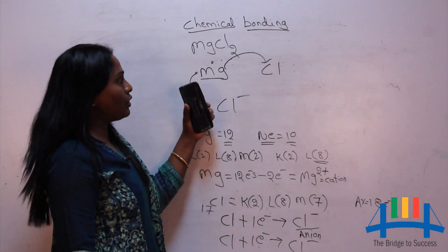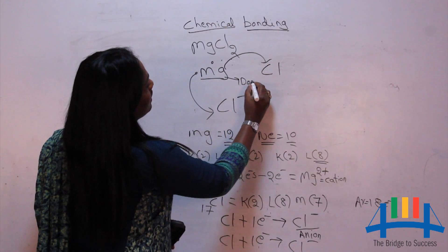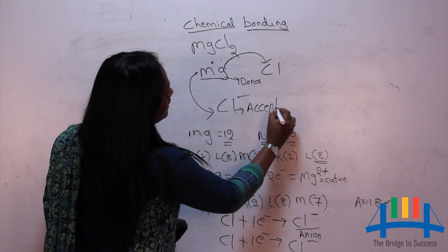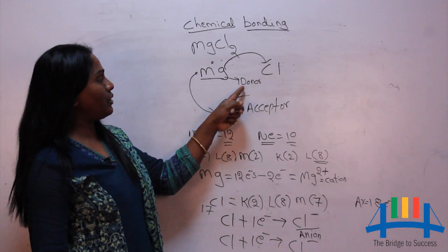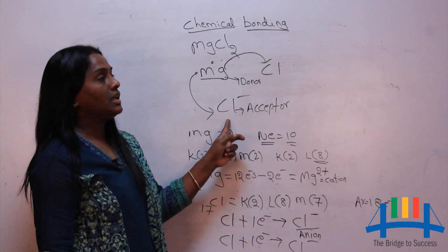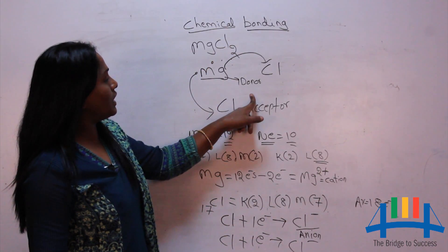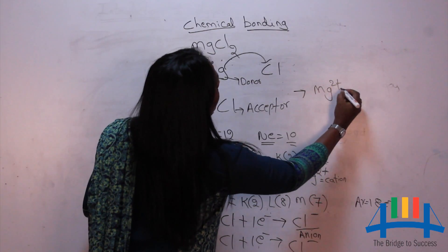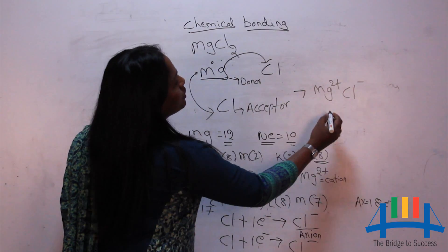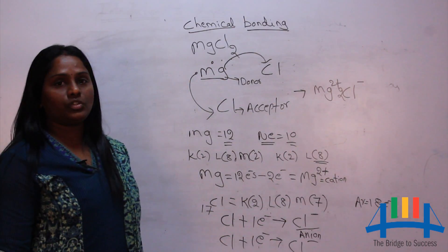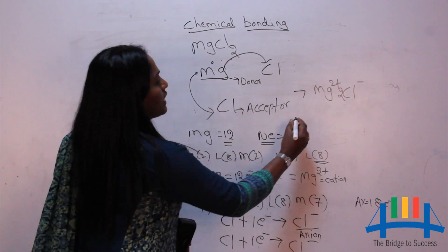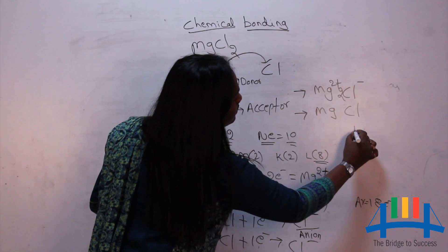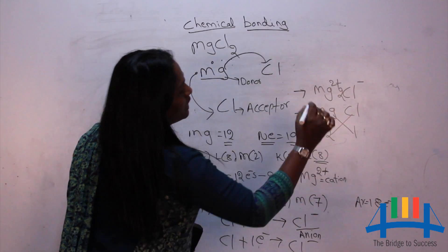The element giving or donating electrons is called the electron donor, and the one accepting is called the electron acceptor. Magnesium gets 2+ and each chlorine gets 1−, giving two chloride ions. By the criss-cross formula: magnesium valency 2, chlorine valency 1 — we get MgCl₂.